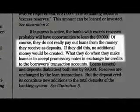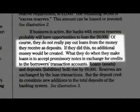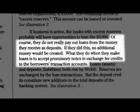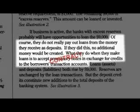This is how the money supply is expanded. As stated in Modern Money Mechanics, of course they, the banks, do not really pay out loans from the money they receive as deposits. If they did this, no additional money would be created. What they do when they make loans is to accept promissory notes, loan contracts, in exchange for credits, money, to the borrower's transaction accounts. In other words, the $9 billion can be created out of nothing simply because there is a demand for such a loan and that there is a $10 billion deposit to satisfy the reserve requirements.